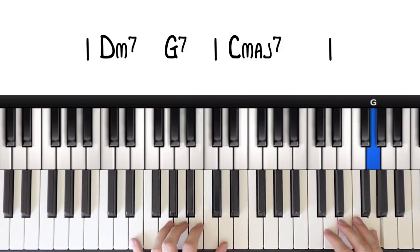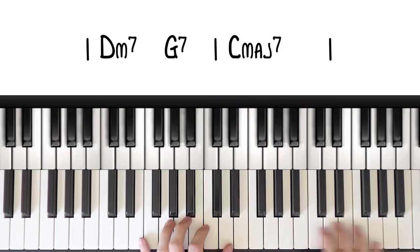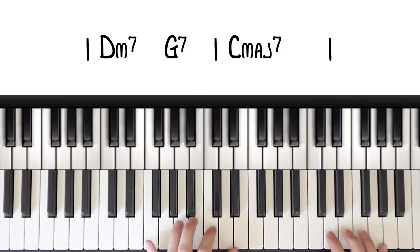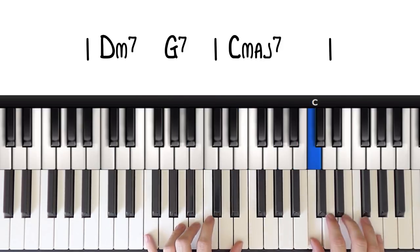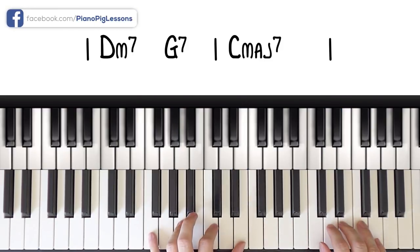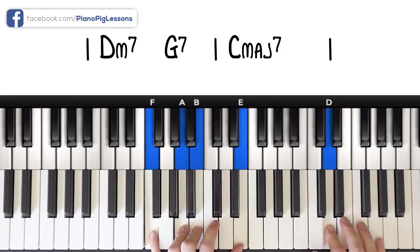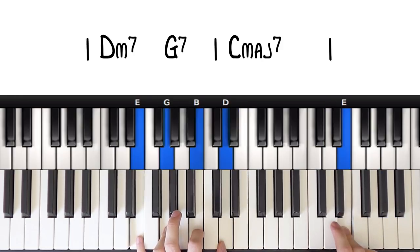And then, we finish off by landing on the 3rd of the C major 7. So C major 7, so 9th of the 2 chord, 5th of the 5 chord and 3rd of the 1 chord.